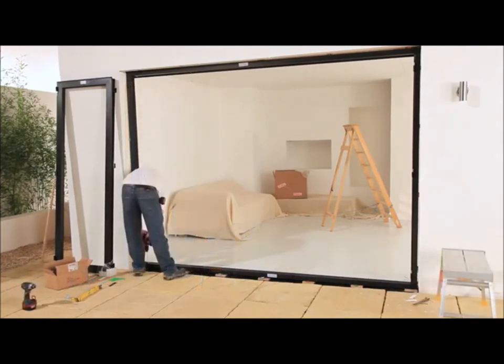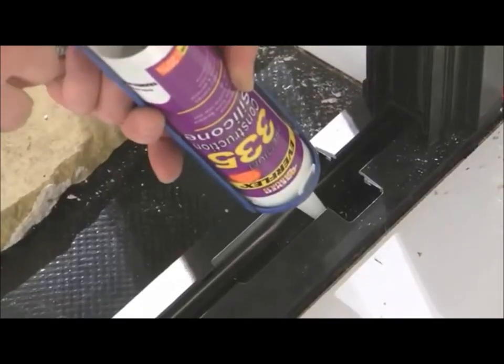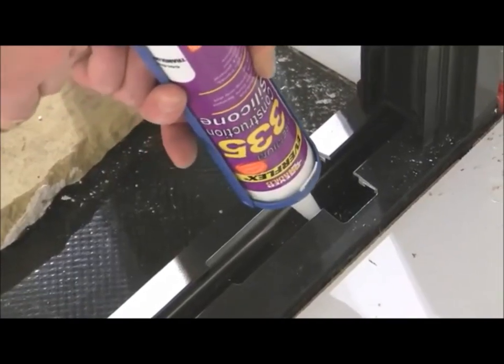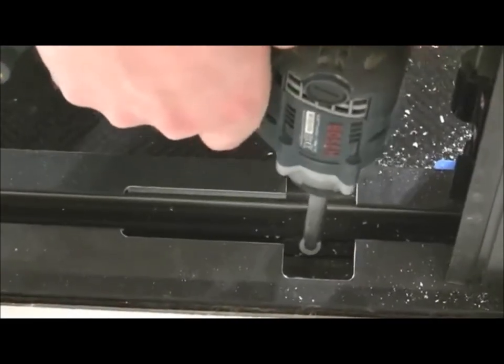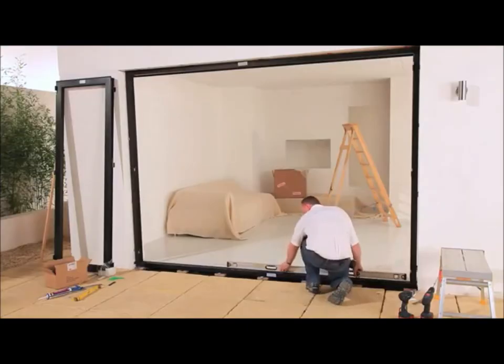Now, fix the bottom track, mirroring the fixing positions on the top track. Before inserting the fixing, apply silicon sealant into the drilled hole to create a waterproof seal. Then, recheck level.